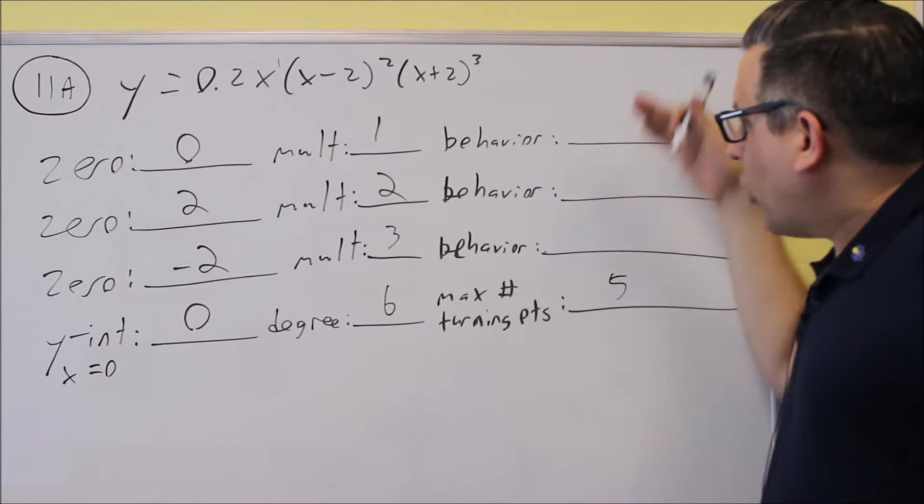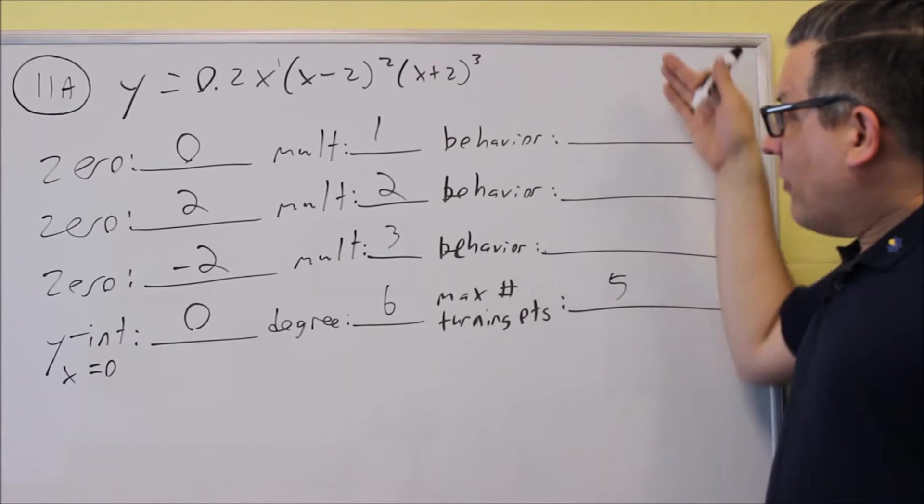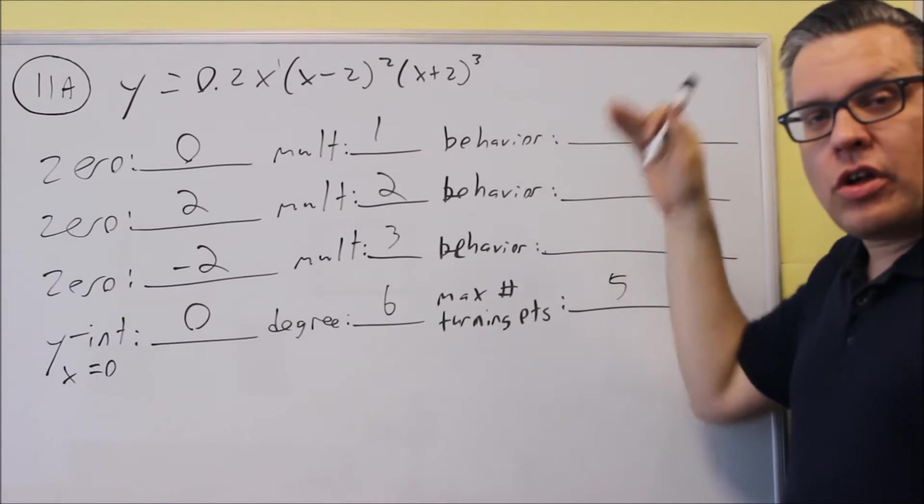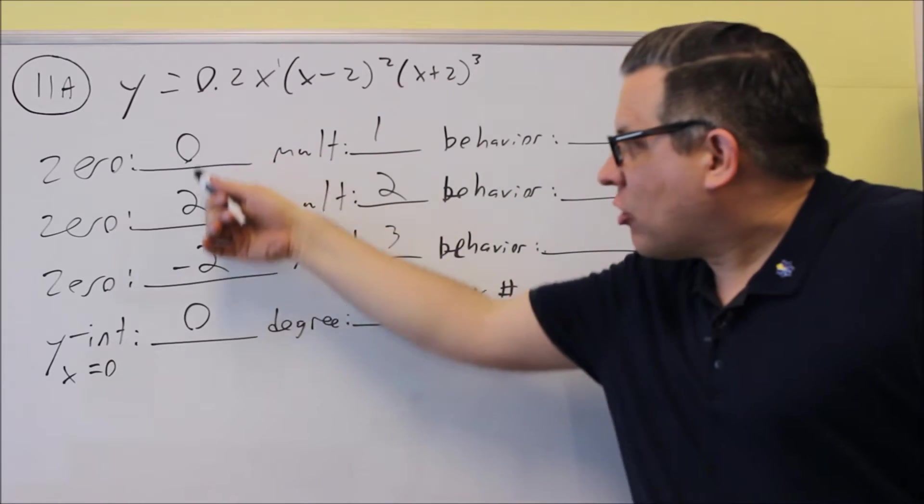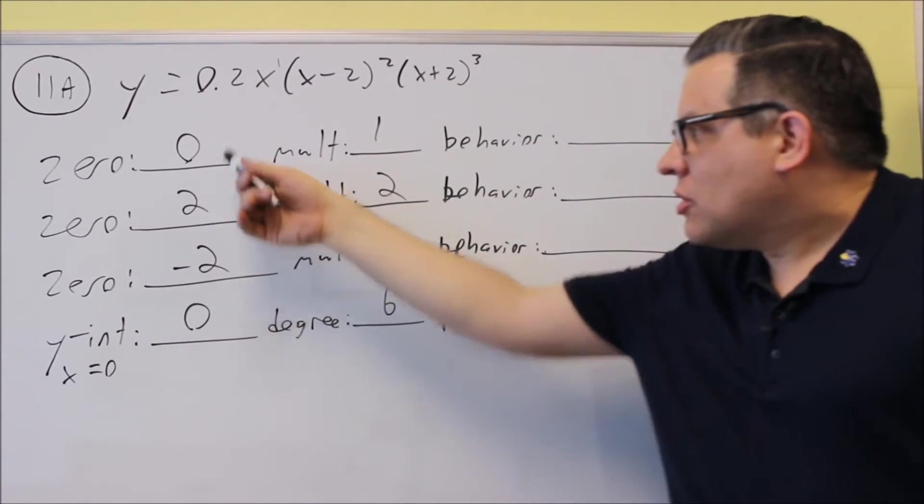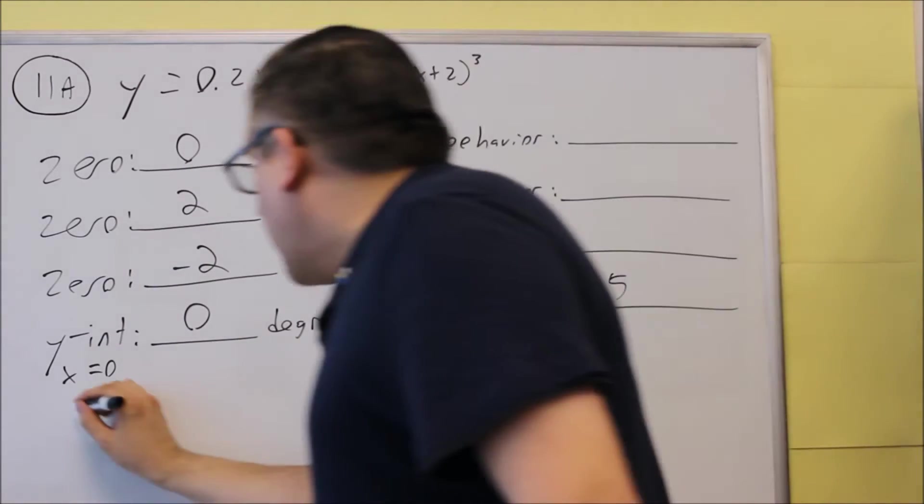So now that we've got that complete, we want to do the behaviors. The behaviors are going to allow us to know what the graph looks like as it crosses the x-axis at these particular numbers. So let's go ahead and start that.